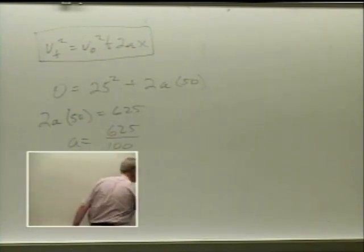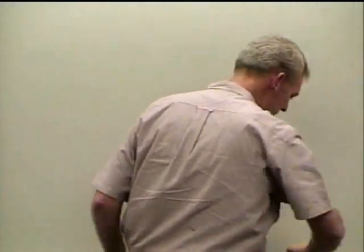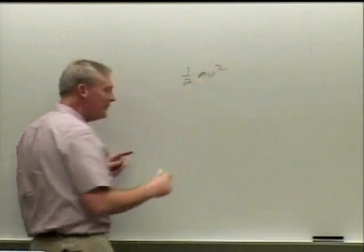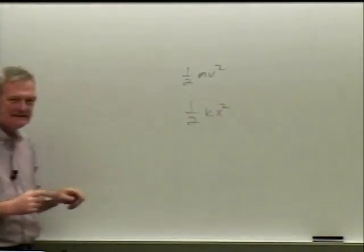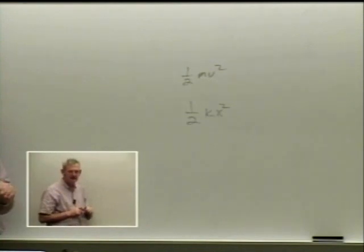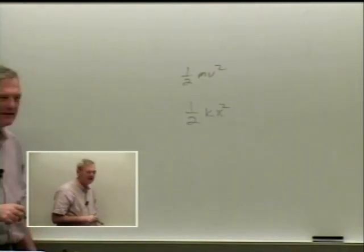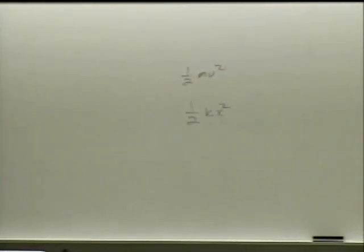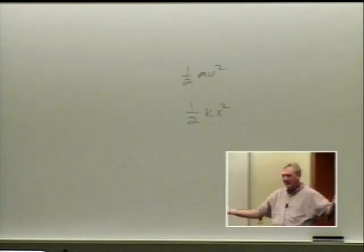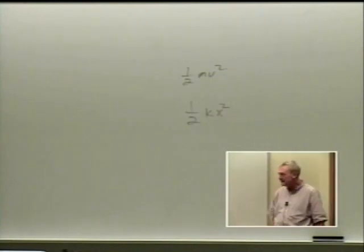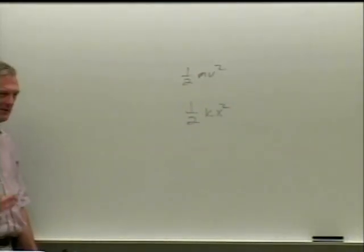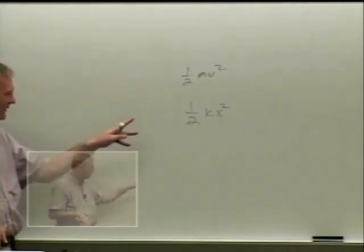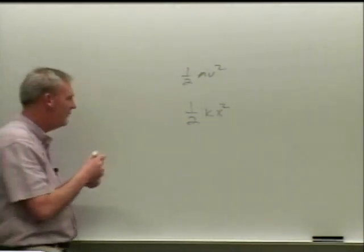Now let's talk about potential energy—gravitational potential energy. We've talked about three energies so far: one-half mv squared is kinetic energy; one-half kx squared is the spring—elastic potential energy—it involves a variable force, and k is the spring constant. If the spring is slack, not stretched in any way, there's no potential for it to do work.